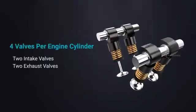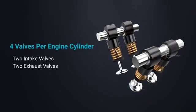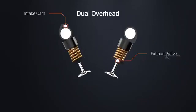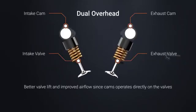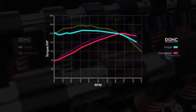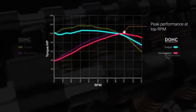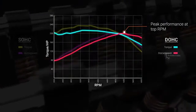DOHC usually implements a four valve per cylinder configuration — two valves for intake and two for exhaust. This configuration has a better valve lift, resulting in improved airflow through the combustion chamber. With less airflow restriction, the DOHC is even capable of generating more horsepower out of smaller displacement. Though this configuration can provide better top-end power, the design complexity and increased components result in more weight and a higher cost of production.